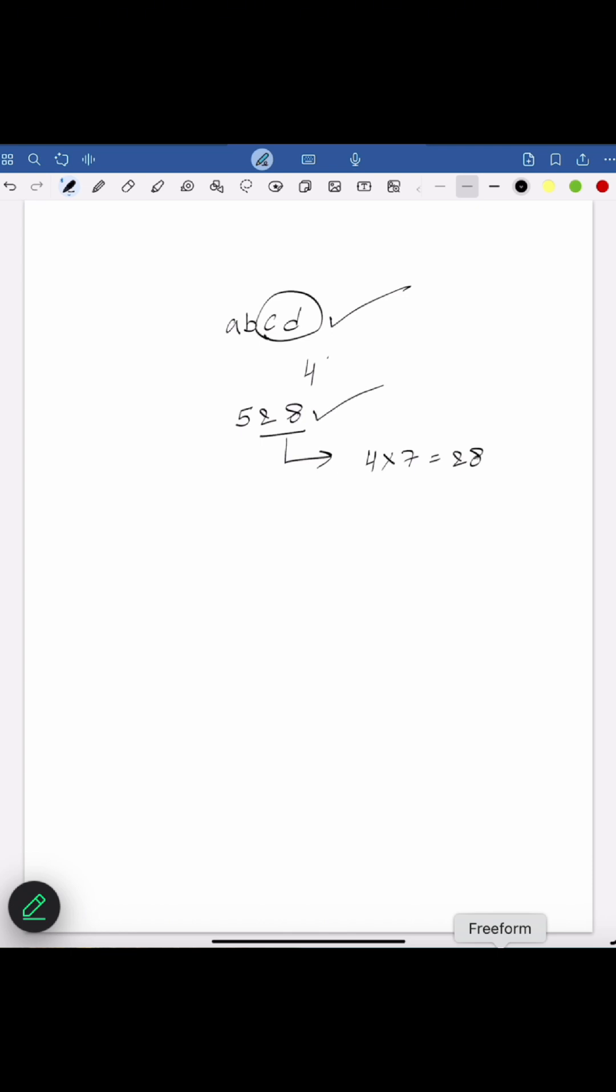So the whole number 528 is divisible by 4. Let's see: 528, we can write it as 4 multiplied by 132. So 528 is divisible by 4.